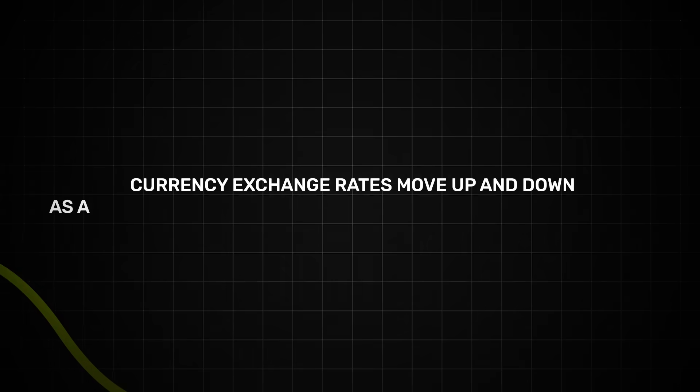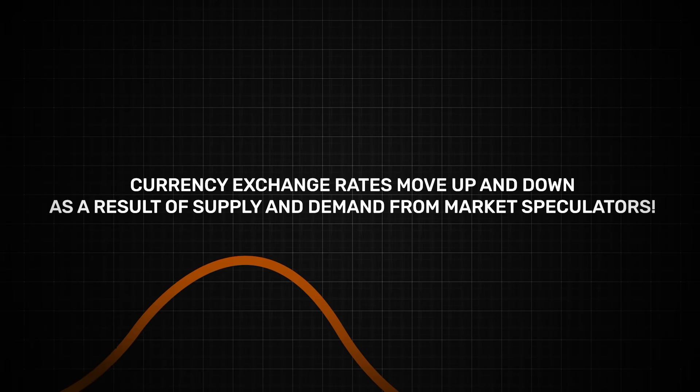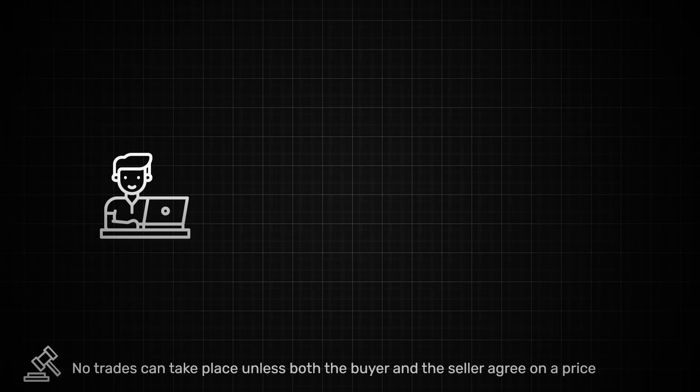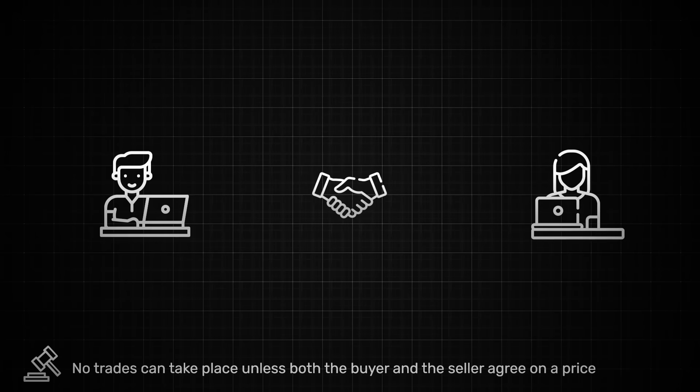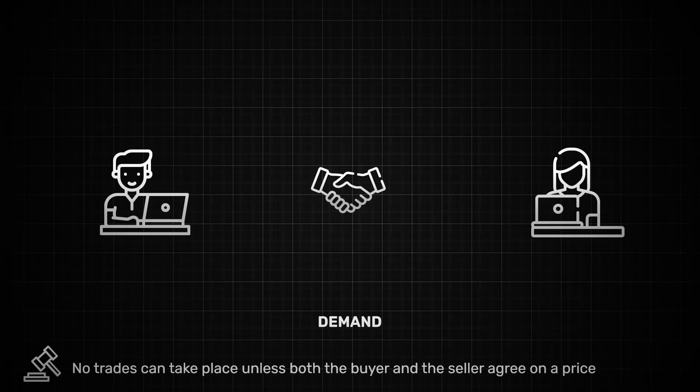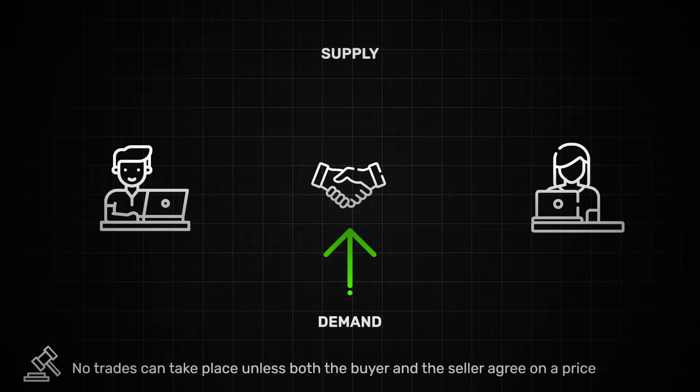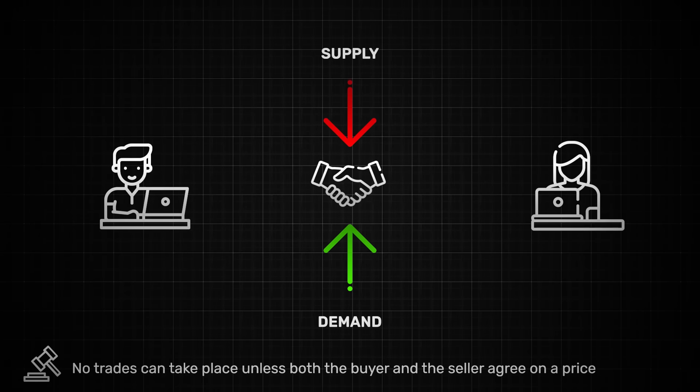Currency exchange rates move up and down as a result of supply and demand from market speculators. No trades can take place unless both the buyer and the seller agree on a price. So this drives the price of currency pairs, where buyers bring with them demand for the pair, applying that upward pressure on prices, while sellers bring supply, applying downward pressure on prices.